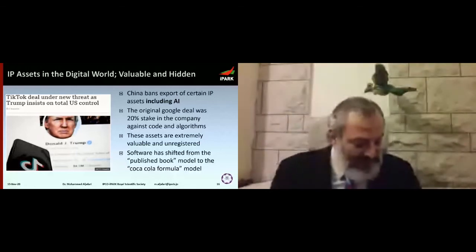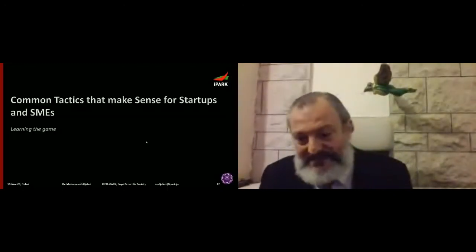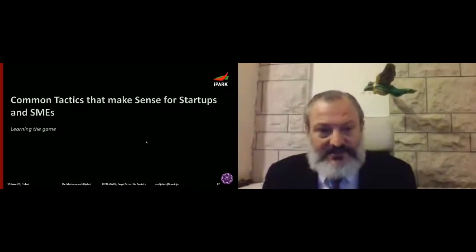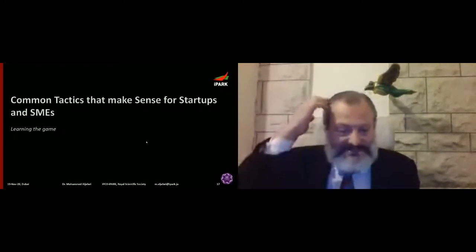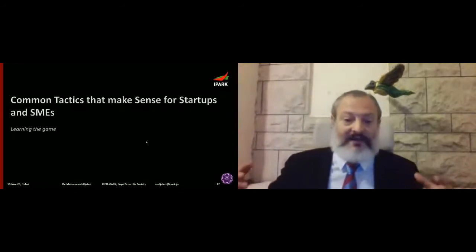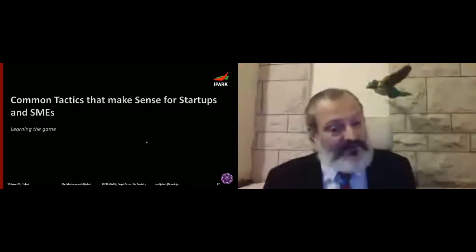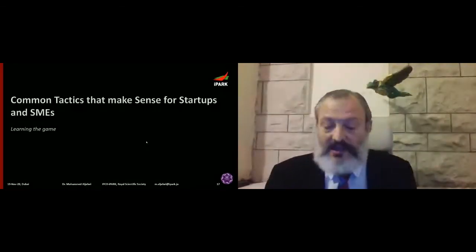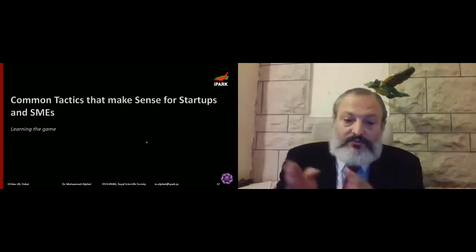Now for the last two or three slides with a few basic tactics. For deep tech: if you are in engineering or science, developing something and looking for a partner, you have to plan your transition from secret to patent — this is a very important plan.